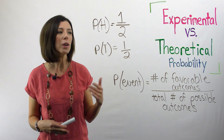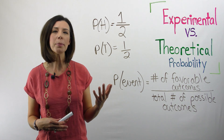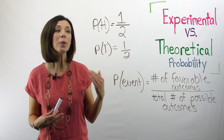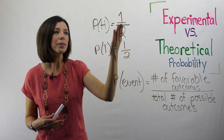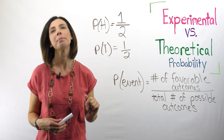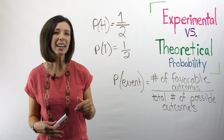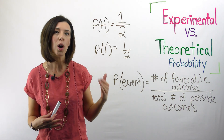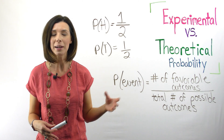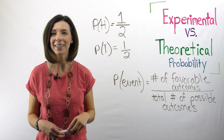Here's where it gets tricky and where we start to distinguish the two. Experimental probability is when you actually start flipping the coin. In theory, we should be able to get heads one out of every two flips — in theory. But you could have really bad luck. You could get tails over and over again, and it could be a long time before you got heads. That's where we get into experimental probability.